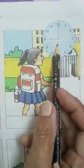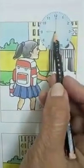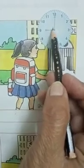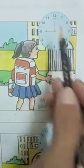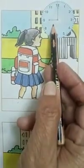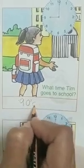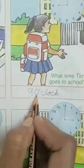Now next. Look at this clock. This clock is showing the time — 9 o'clock. The hour hand points towards 9 and the minute hand points towards 12. So this clock is showing 9 o'clock. The question is: what time does Tim go to school? 9 o'clock. So we will write here 9 o'clock. You will use capital O here.